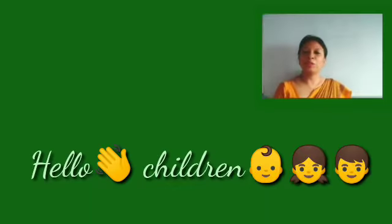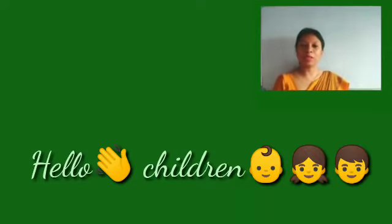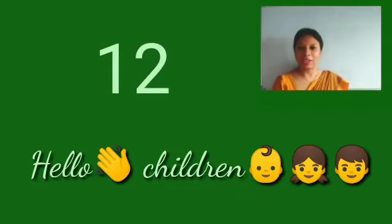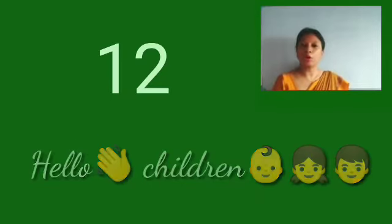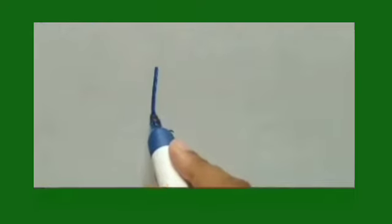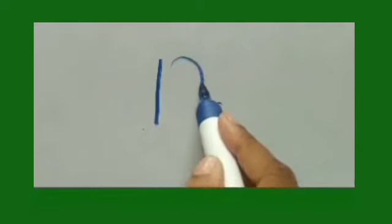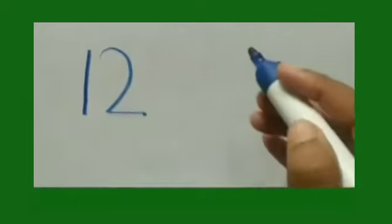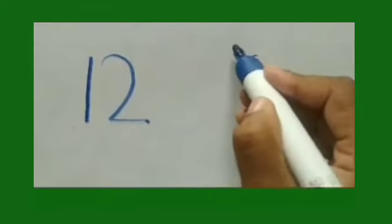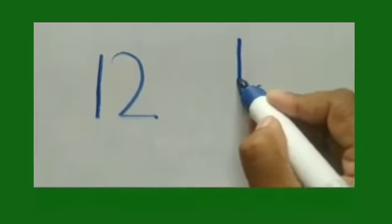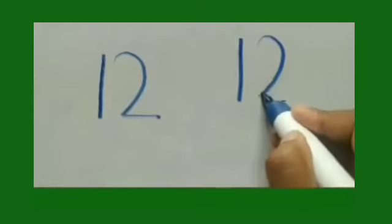Hello my dear children of playgroup. We have learned which number? Number 12. Let's read, write, and count the objects. One and then two makes 12. Let's write one more time: one and then write two, twelve.